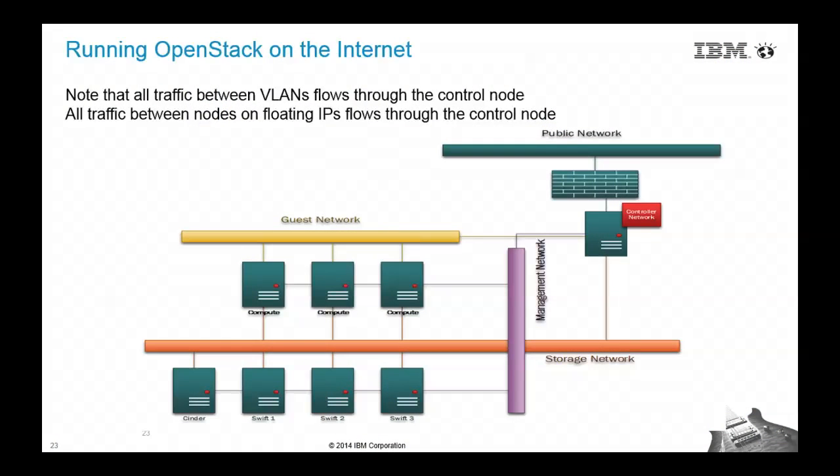For administration, we had a jump box behind an OpenVPN — the only way to administer the environment was using this VPN to hit the administrative side. Our network layout: public network with a firewall, behind which sat the controller and network node on the very same node. We had the guest network, storage, and admin. The guest network was VM-to-VM communication; the storage network was for communicating with Swift and Cinder. Those two networks used 10-gigabit NICs, while the management network was a one-gigabit NIC.